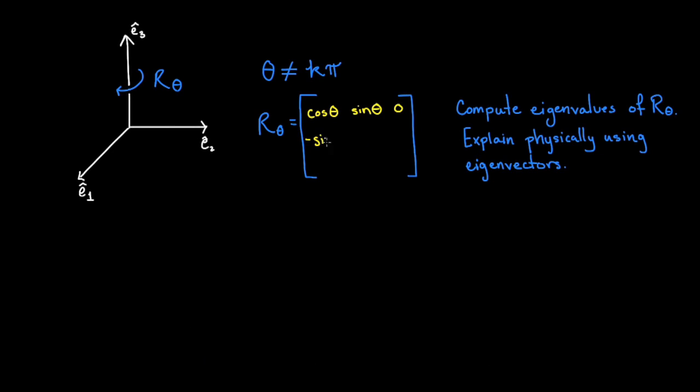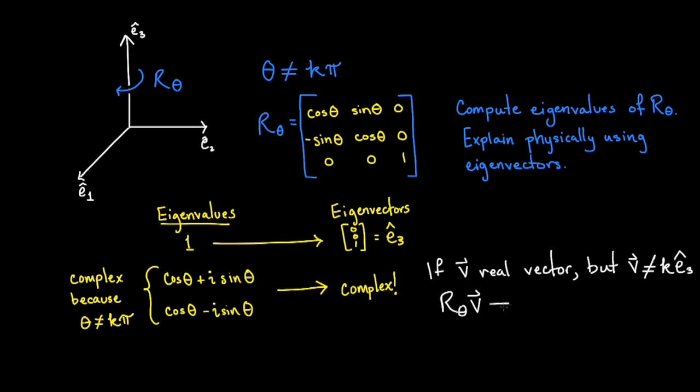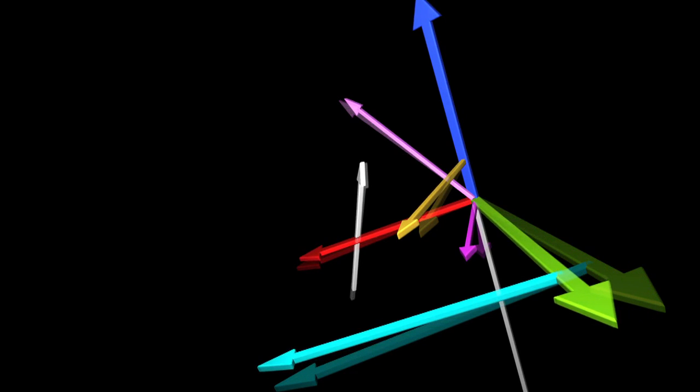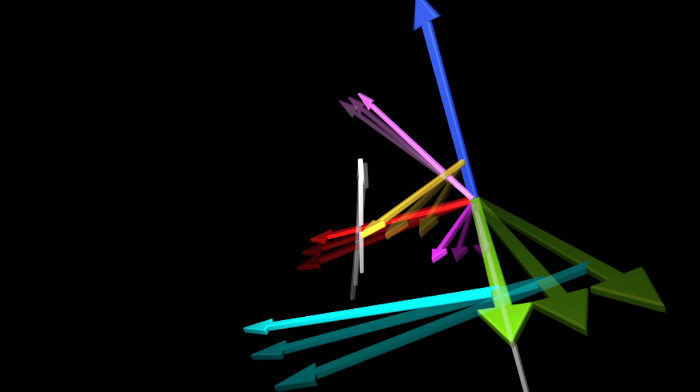You should have found one real eigenvalue equal to 1 and two complex conjugate eigenvalues. The real eigenvalue corresponds to the eigenvector e3, which is sent to itself by the rotation, hence the eigenvalue of 1. The fact that the other two eigenvalues are complex means that no other vector is sent to a real scalar multiple of itself. This makes sense geometrically because no other vector points in the same direction it started in after being rotated.